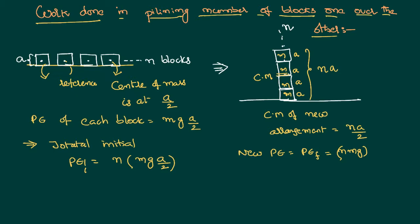Total mass is N times Mg. Into H I have to write. H is nothing but the location where the center of mass is there. Therefore the center of mass is going to be equal to N A by 2.